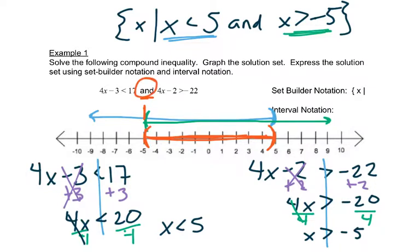So our interval notation would be to read that graph from left to right. It starts at negative 5 with a parenthesis, and it goes to 5 with a parenthesis. And so that's our interval notation.